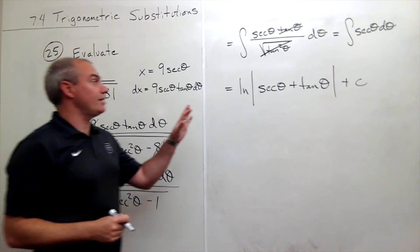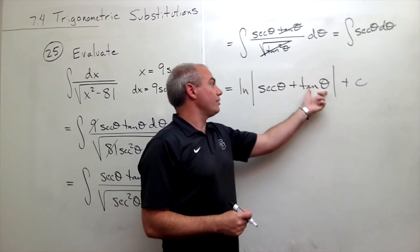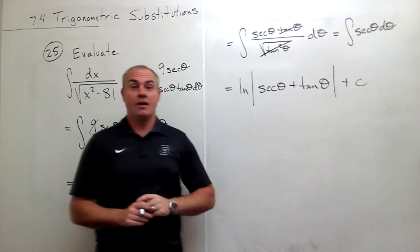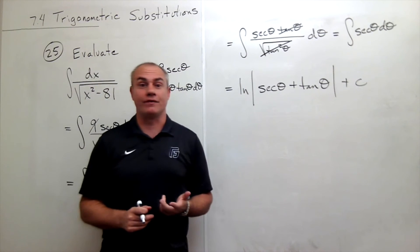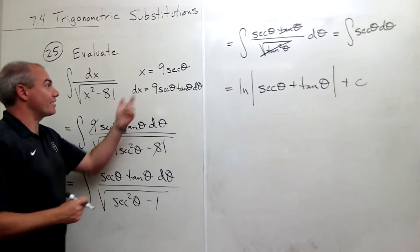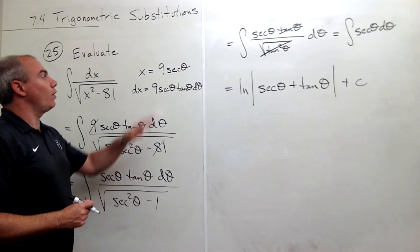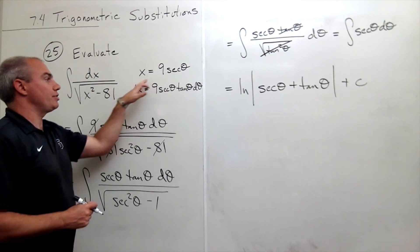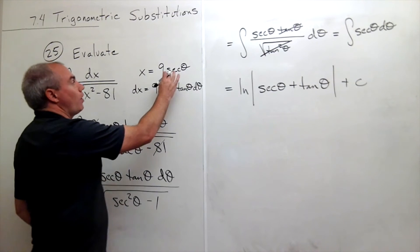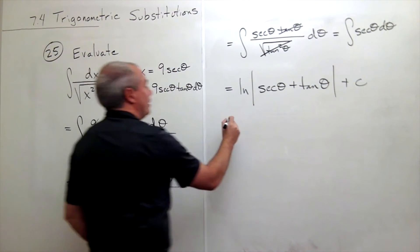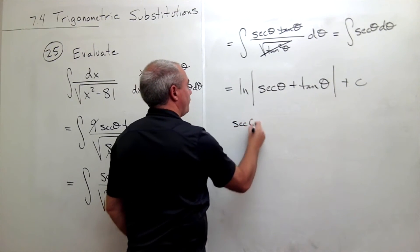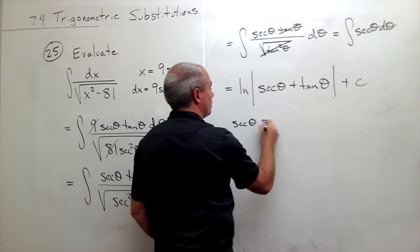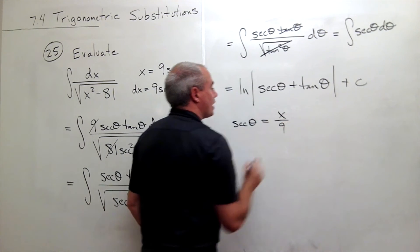I got the antiderivative in terms of theta, but I need it in terms of x. From our substitution, we know that secant theta equals x divided by 9.